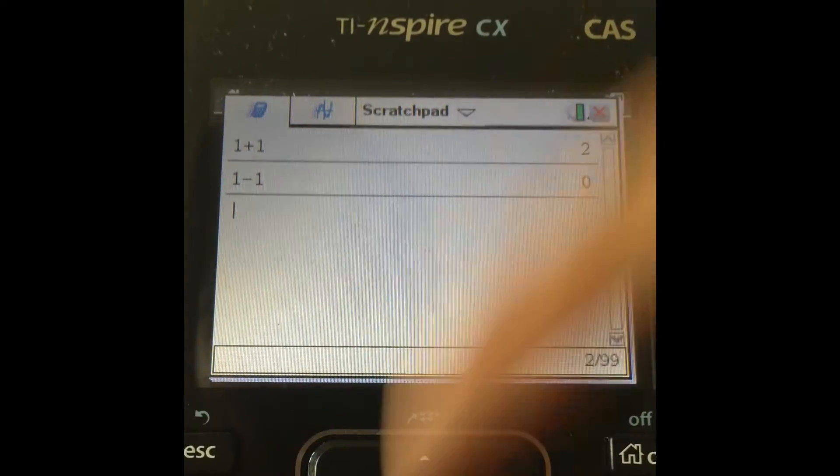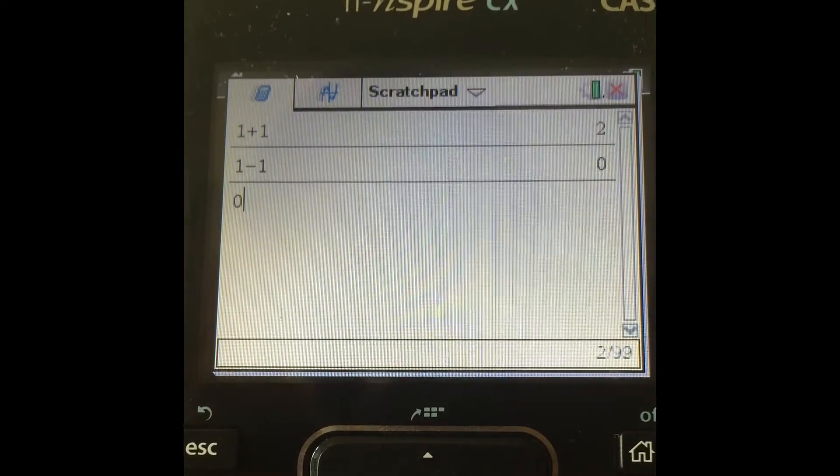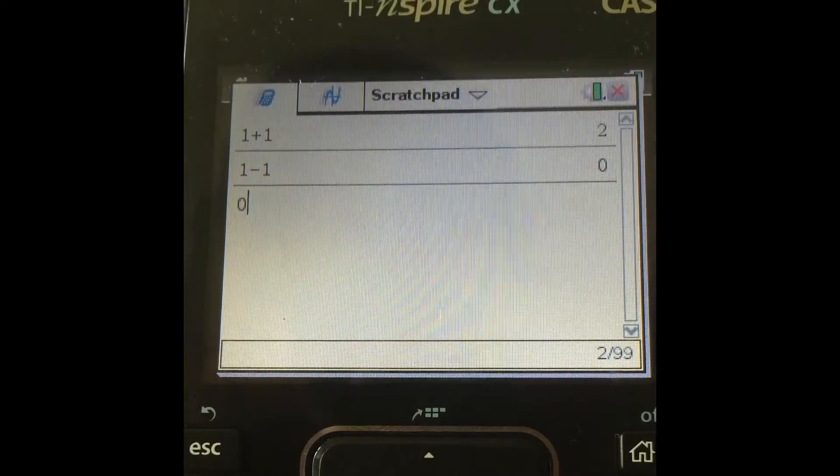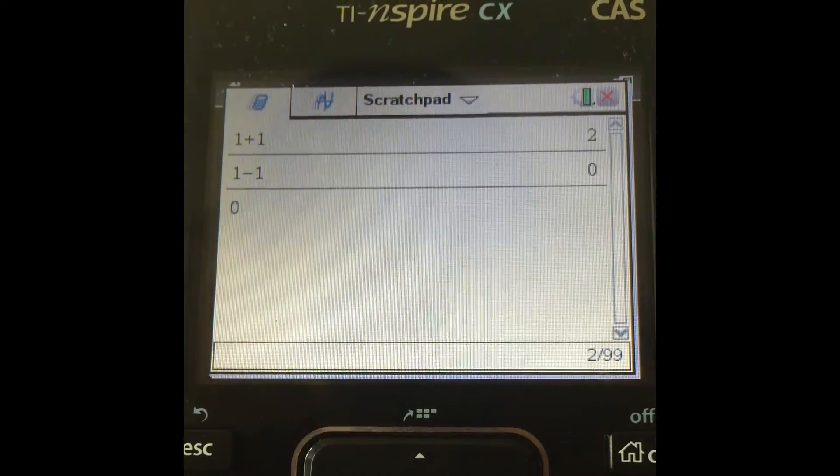And also, if you want the answer to be on the next line, you can just scroll up and press enter. It copies the answer. So this can be useful when your answer is a long string of decimal places or something very complicated.